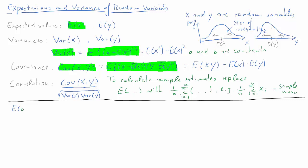Now let's learn how to calculate with expectations and variances. If you have a random variable x multiplied by the constant a and you want the expectation of that, all you get is a times the expected value of x — the constant can be drawn out of the expectations operator. If you want to calculate the expected value of a times x plus b times y — two random variables each pre-multiplied with a constant — you get a times the expected value of x plus b times the expected value of y. The expected value of a sum is the sum of the expected values.